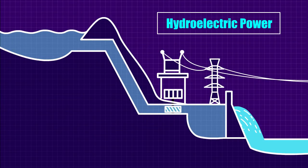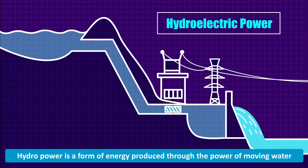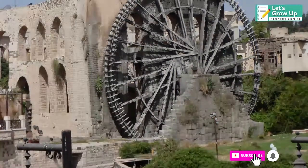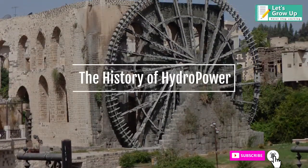Hydroelectric energy, also called hydroelectric power or hydroelectricity, is a form of energy produced through the power of moving water such as the ocean, rivers, and waterfalls. In this lesson we will learn about the history of hydro power.